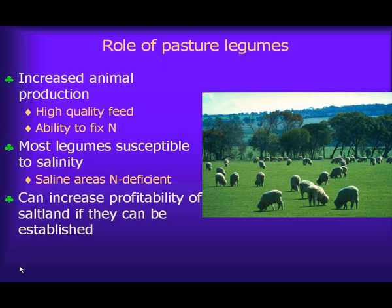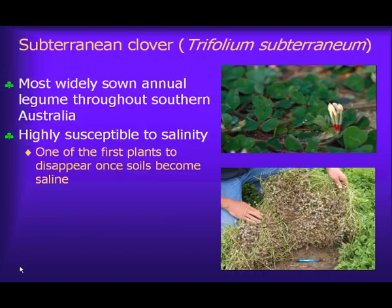Firstly I'll talk about pasture legumes. Our interest in them is because they increase animal production — they're high quality feed in their own right, very nutritious with high protein levels and high digestibility. They're also able to fix atmospheric nitrogen, enabling other species in the pasture to grow better. However, most legumes are susceptible to salinity, meaning saline areas tend to be nitrogen deficient. Economic studies have shown that establishing legumes into salt land pastures can markedly increase profitability. Subterranean clover is the most widely sown annual legume throughout southern Australia but it's particularly sensitive to salinity and is one of the first plants to disappear once soils become saline.